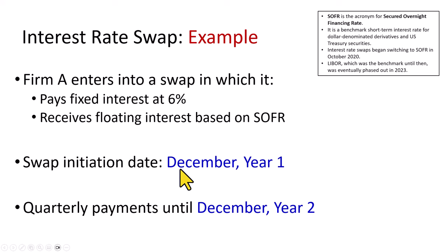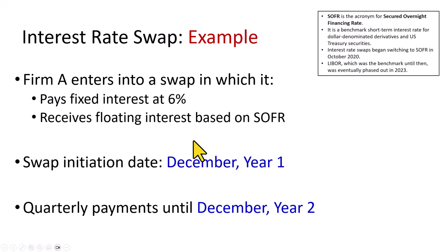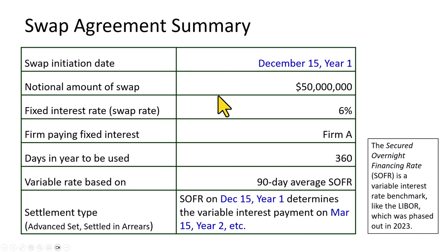Here's an example of how to carry out the calculations. Firm A enters into a swap in which it pays fixed at 6% while receiving floating. The floating interest rate is based on SOFR — secured overnight financing rates — a benchmark often preferred in transactions such as this. The swap starts in December of the beginning year and carries on with quarterly payments until December of the next year. The notional amount of the swap is $50 million — notional in the sense that the parties do not exchange this principal; it simply is the basis upon which the fixed and variable rate payments will be determined.